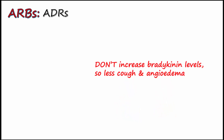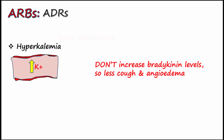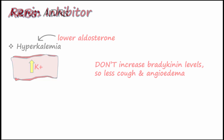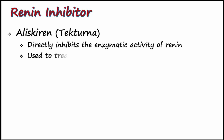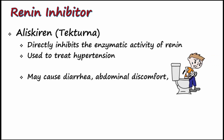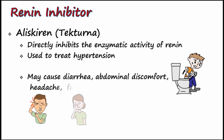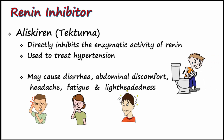Like ACE inhibitors, ARBs can still cause hyperkalemia due to lowering aldosterone. Aliskiren is a direct renin inhibitor and is used to treat hypertension. Aliskiren may cause diarrhea, abdominal discomfort, headache, fatigue, and lightheadedness.